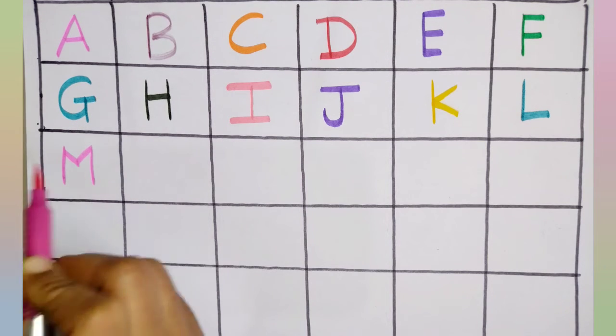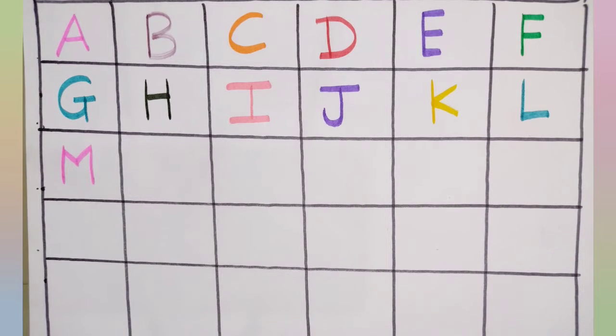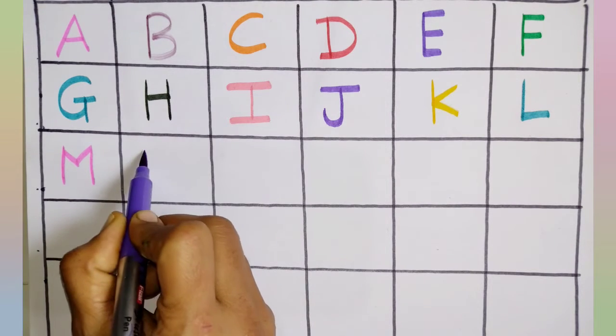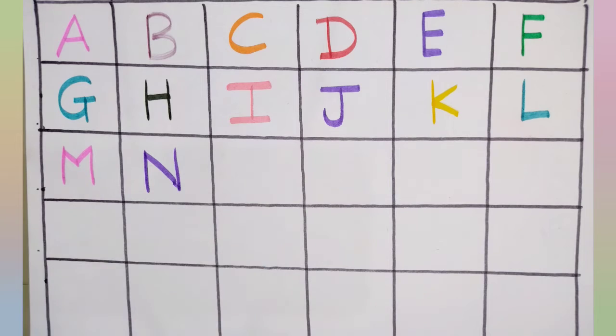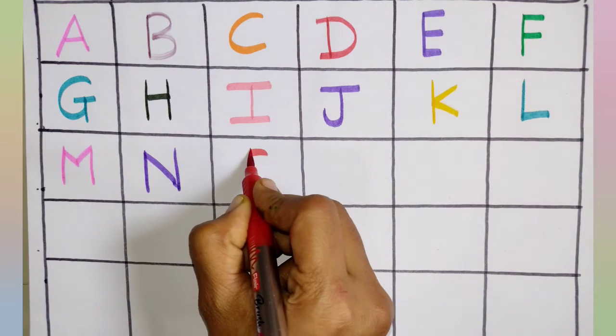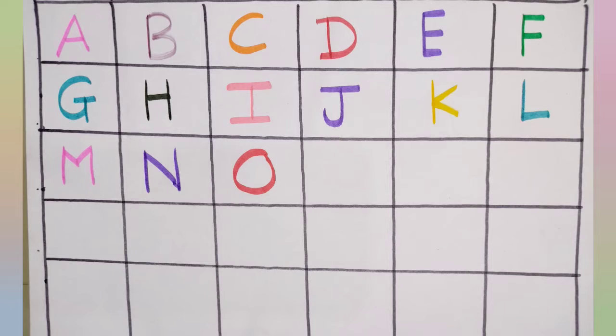This is a pink color, M, M for monkey. This is a purple color, N, N for nest. This is a red color, O, O for orange.